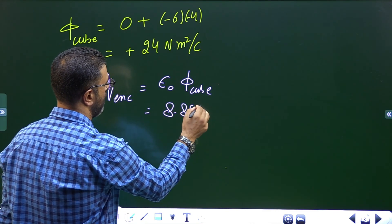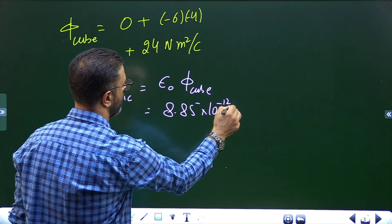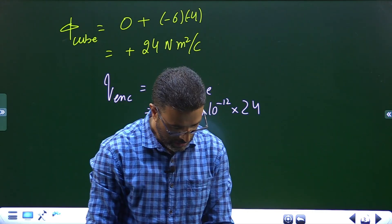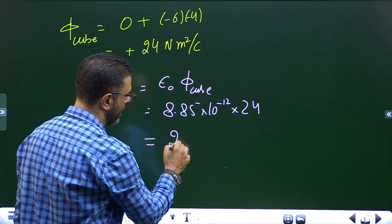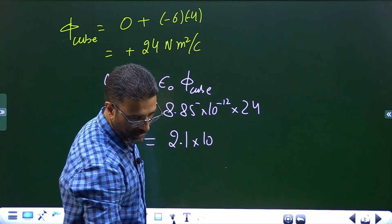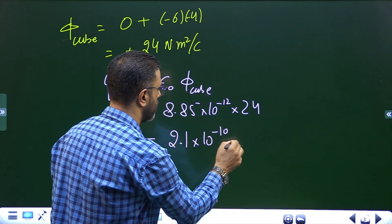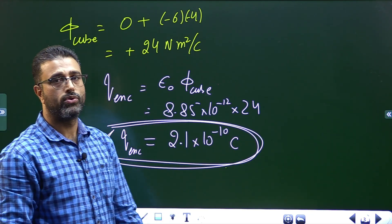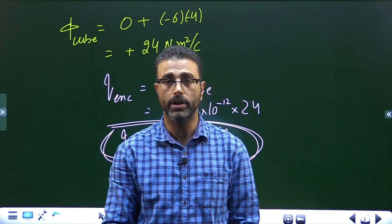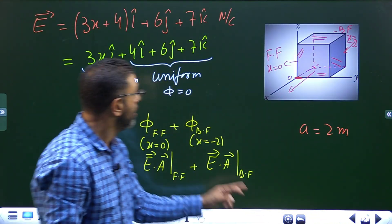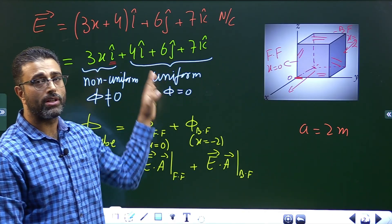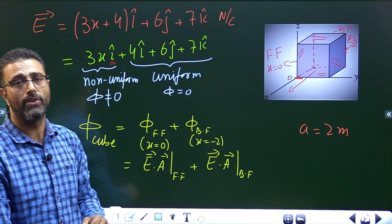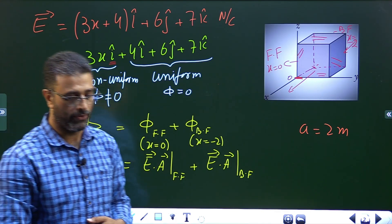So charge enclosed = ε₀ × 24 = 8.85 × 10⁻¹² × 24 = 2.1 × 10⁻¹⁰ coulombs. To summarize: the uniform part of the field does not contribute to the flux through a closed surface; it is only the non-uniform part of the field that contributes to the flux through the closed surface.